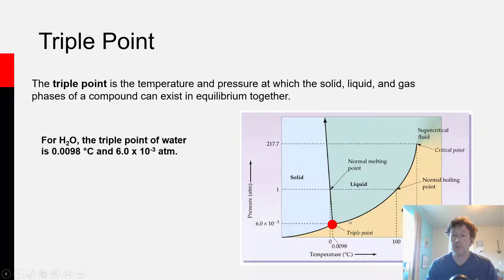If you continue along the liquid-vapor phase boundary up to about 374 degrees Celsius and 217 atmospheres of pressure, you enter a new region, which is prefaced by something labeled the critical point. And at this point, water becomes a special phase of matter known as a supercritical fluid.